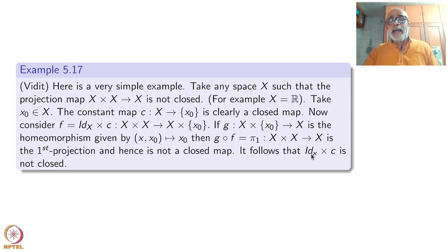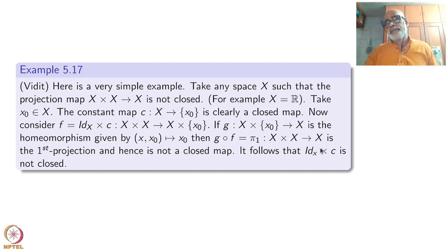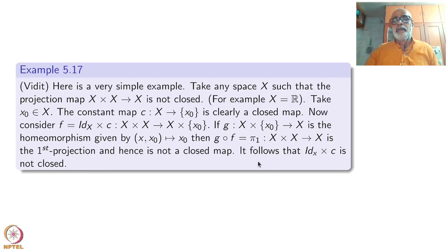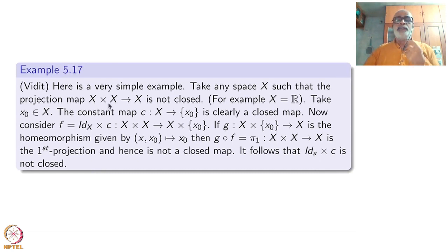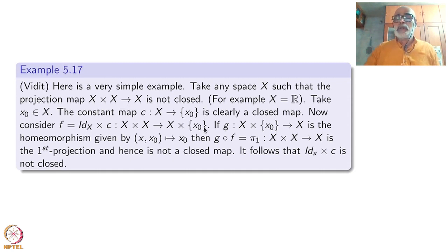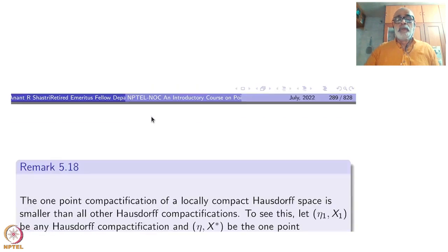It follows that the identity cross constant map F is not a closed map. If F were closed and G is closed, the composite would have been closed. The composite is not closed and one factor G is closed, so F cannot be closed. All that we used is that X is a possibly non-compact space, for example X equal to R, such that the projection map is not closed.